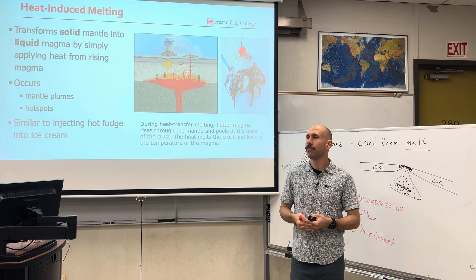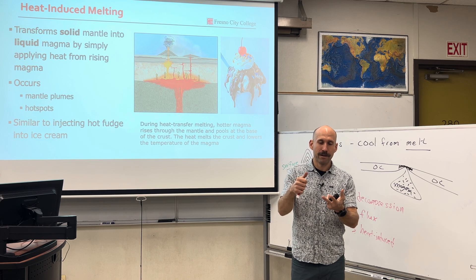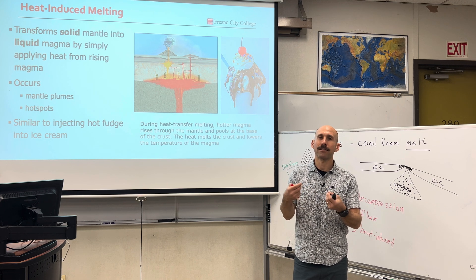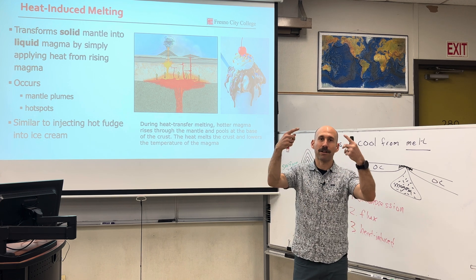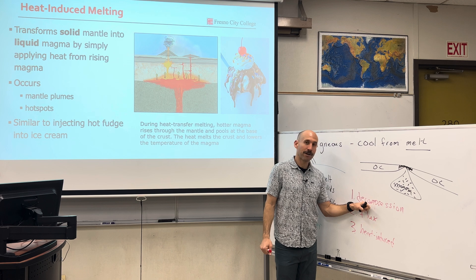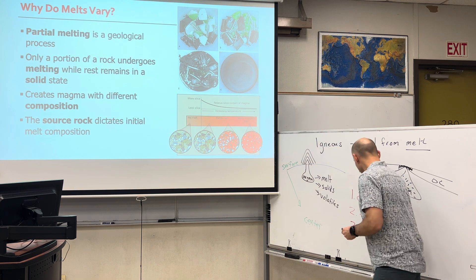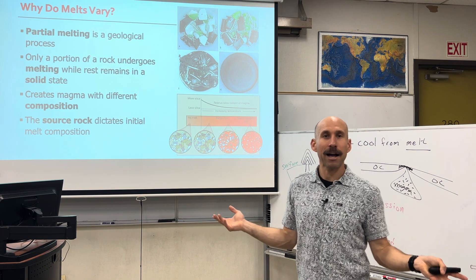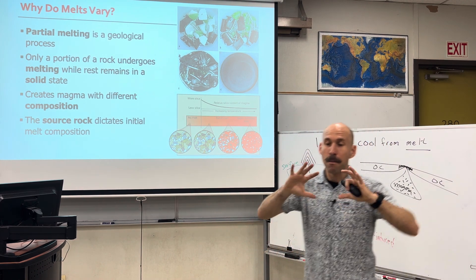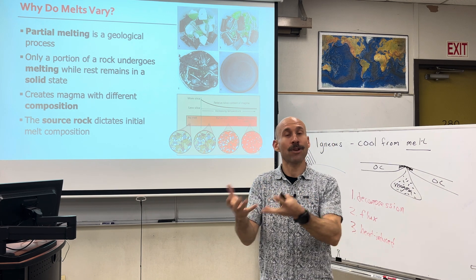Where do we have volcanoes? We have them at divergent boundaries, at convergent boundaries, and at hot spots. What generates the magma in the magma chamber that feeds the lava that erupts as a volcano? It's the processes of decompression melting, flux melting, or heat-induced melting. Not every volcano is erupting the same kind of material, because melts vary — they vary because of the processes that melt the rock and also the processes that turn that melt into solid rock again.